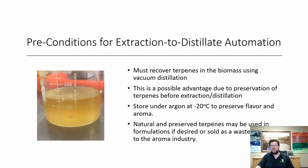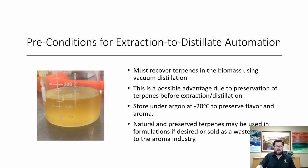There is one precondition for extraction and distillate automation: you really need to decarboxylate prior to running an extraction. We recommend vacuum distillation — we've been doing this for years and it works great. There are additional benefits: it is possible to preserve the terpenes before extraction, thereby maintaining a lot of the flavor and aroma. You can store those terpenes under argon at minus 20 degrees to preserve them, then use them in formulations, or sell them to the aroma industry and various industries that use natural terpenes — especially if you have a famous strain, a strain-specific product, or certified organic material. These terpenes can be certified organic, so you're basically throwing away money if you don't use them.